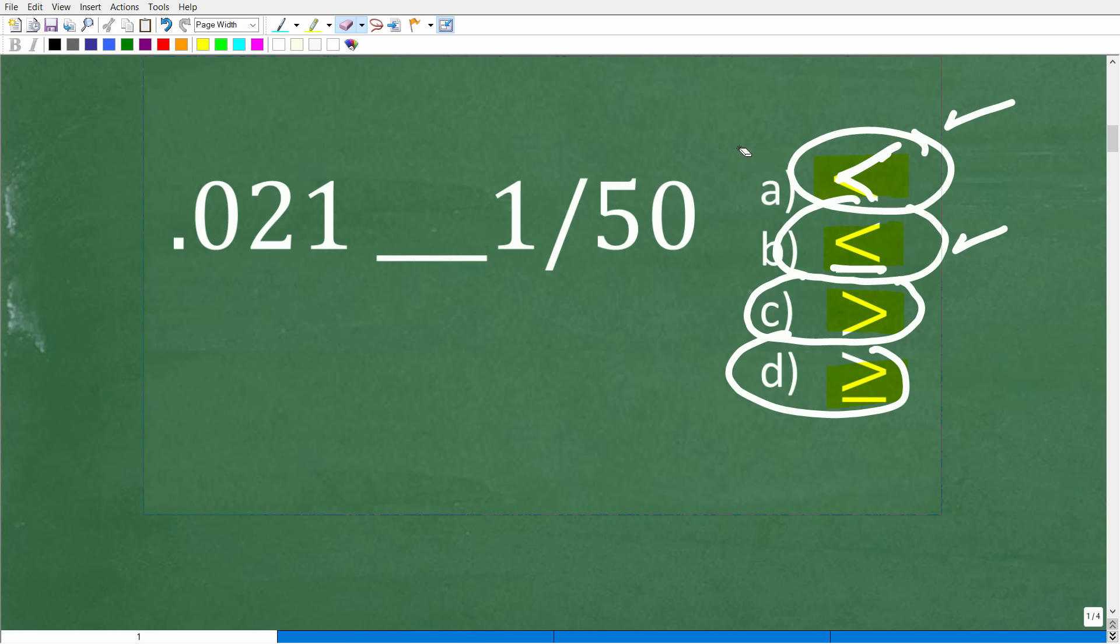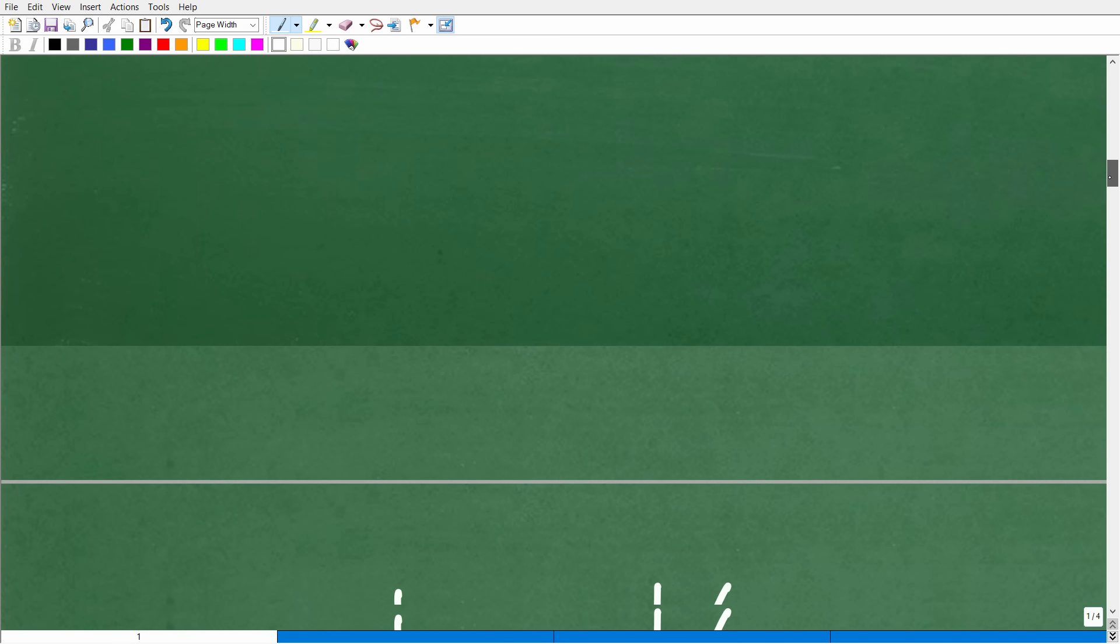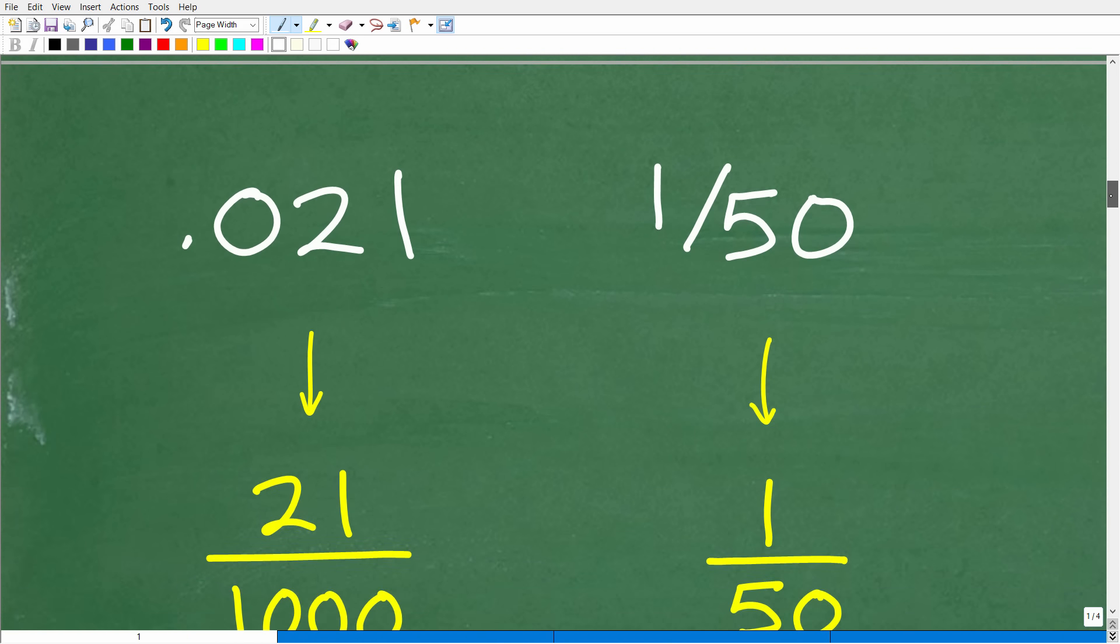So really the challenge here is to figure out which one of these numbers is the lower number in terms of its value. So 0.021. So what I'm going to do is use my knowledge of place value to write this decimal as a fraction because I already have a fraction over here, 1 over 50. Now, I could turn this into a decimal, but I think it might be easier just to turn this decimal into a fraction.